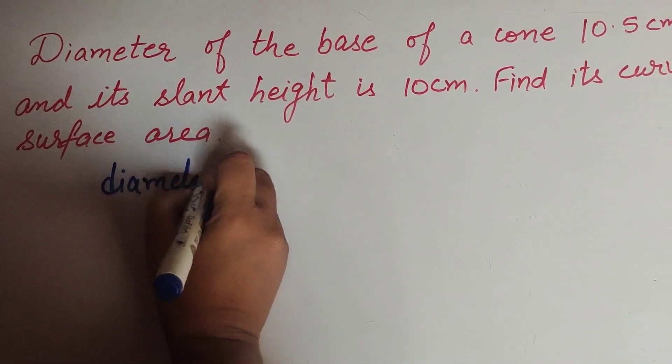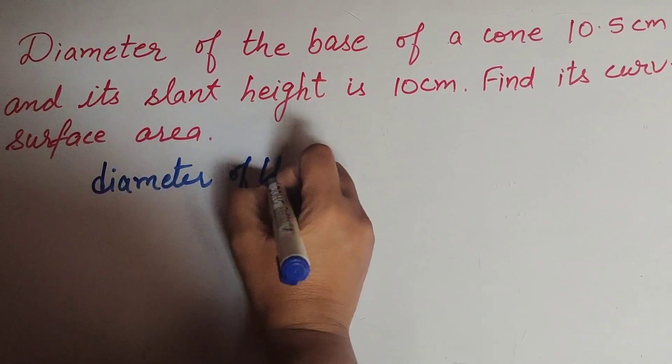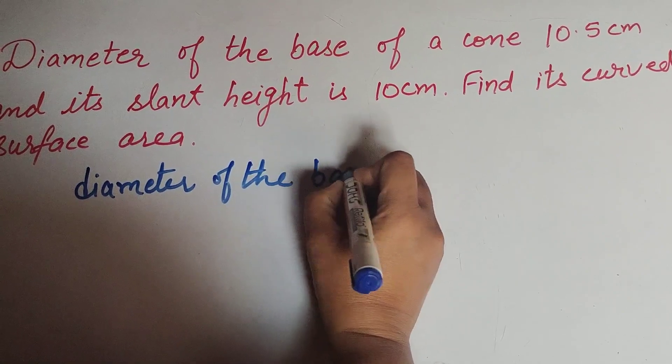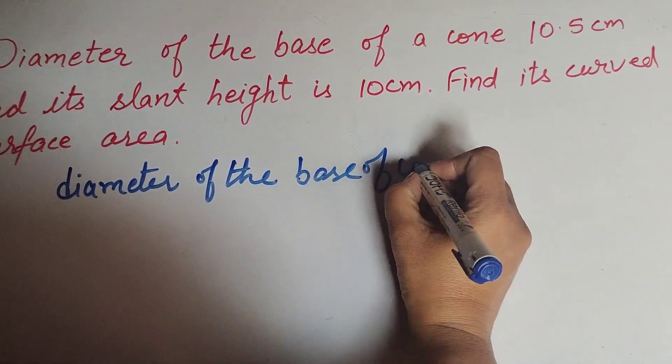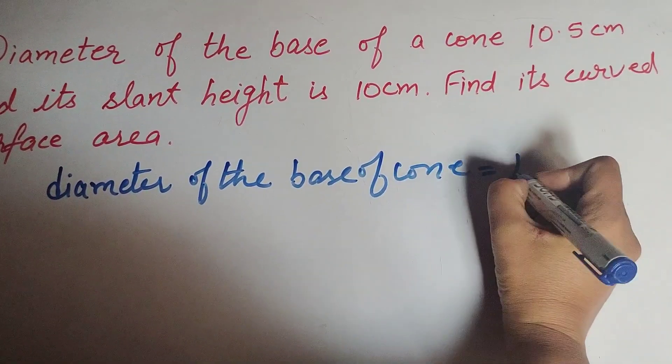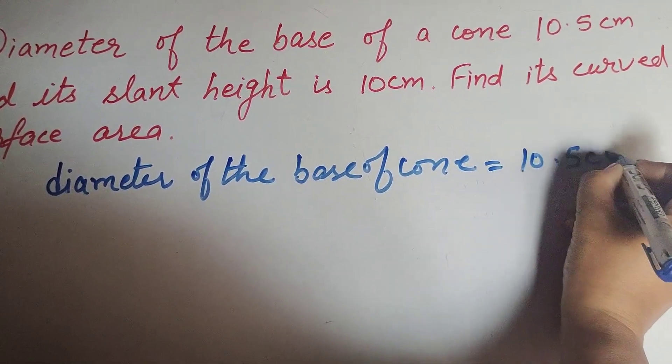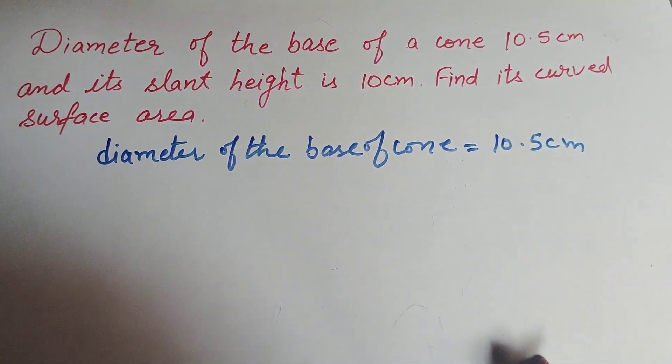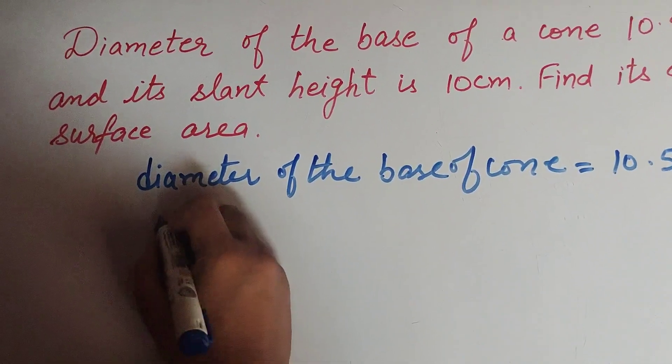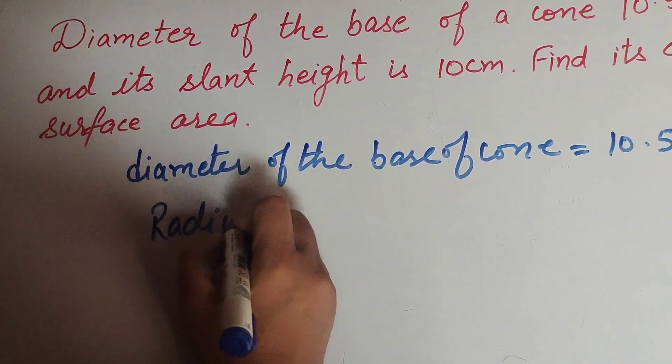So let's start. Given is the diameter of the base of the cone, which equals 10.5 centimeters. Since diameter is given, first we find its radius.